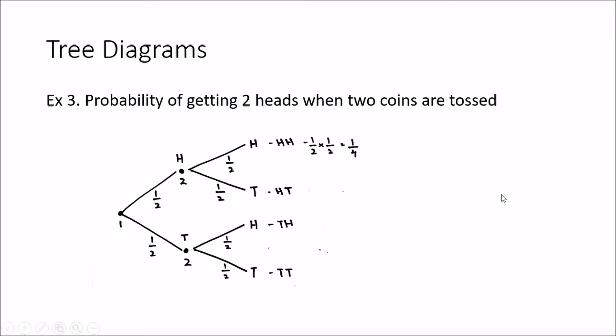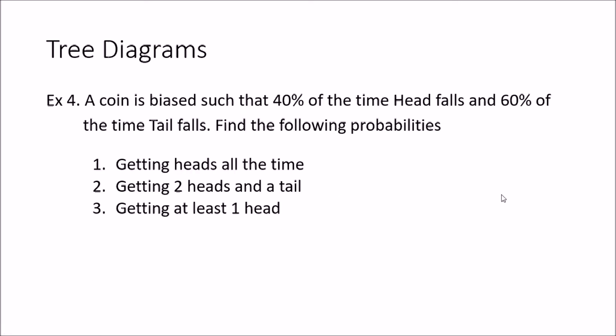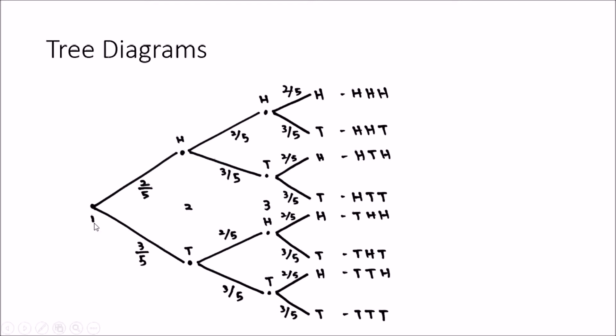Now we look at the fourth example, which is more complex. A coin is biased such that 40% of the time a head falls and 60% of the time a tail falls. We need to find three probabilities: getting heads all the time, getting two heads and a tail, and getting at least one head. The coin is tossed three times, giving three events. For the first toss, the probability of a head is 2 over 5 and the probability of a tail is 3 over 5.